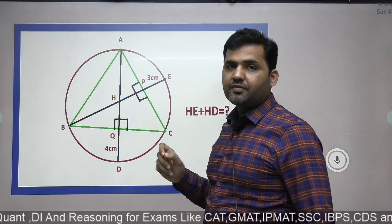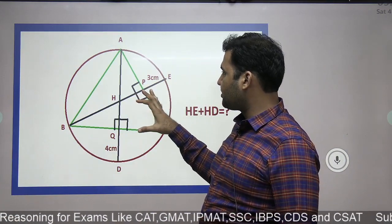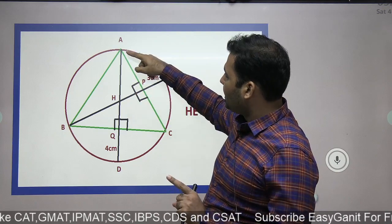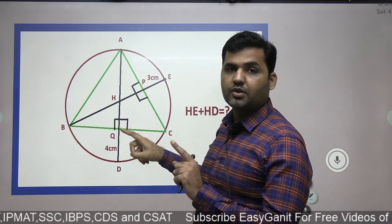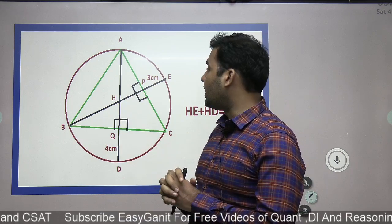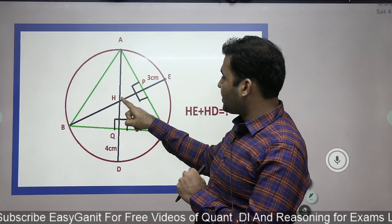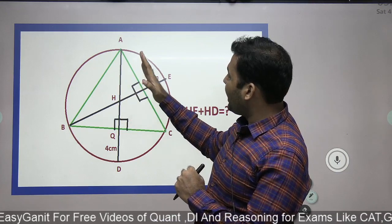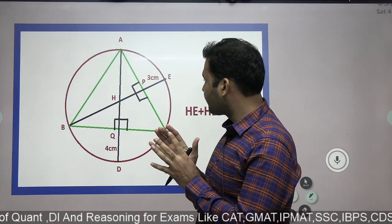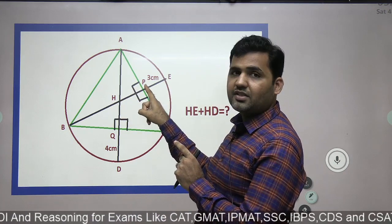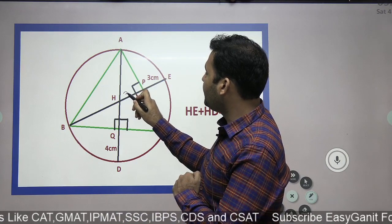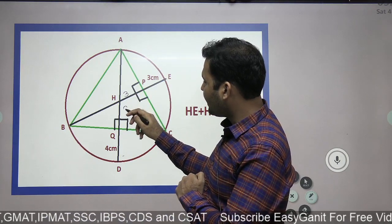If you know this rule, the question can be solved within 10 seconds. The point of intersection of the altitudes of the triangle is known as the orthocenter. The rule says: the orthocenter when reflected from any side of the triangle, the image of the orthocenter will be made on the circumference of the circle. That means the length of PE will be the same as the length of HP, and the length of QD will be the same as the length of HQ.